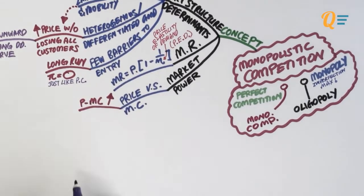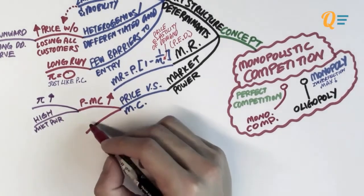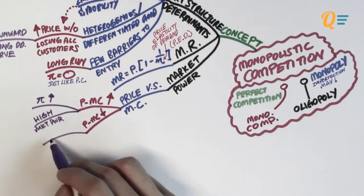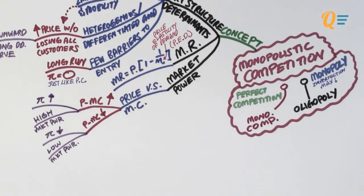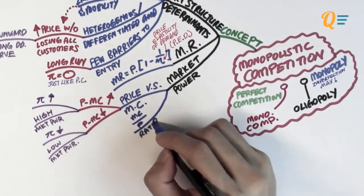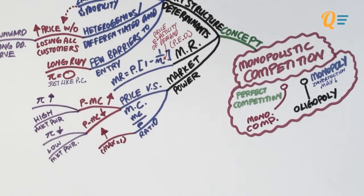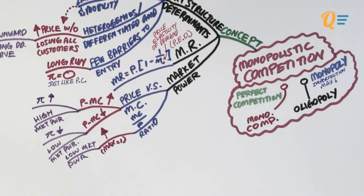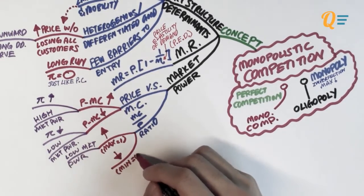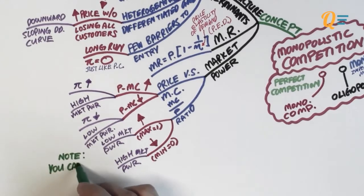If the difference between the price and the marginal cost is very high, this means you can potentially make higher profits — that is due to high market power. If the difference is lesser, your potential profits will be lower, giving you lower market power. You can also look at the MC to price ratio: if this ratio is increasing to a maximum of 1 — because a surviving firm charges at minimum MC, so MC divided by MC equals 1 — market power is relatively low. Conversely, if the ratio is very low, approaching 0, the firm has very high market power.